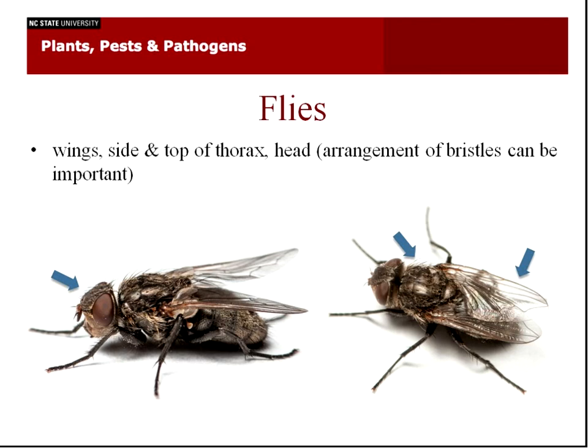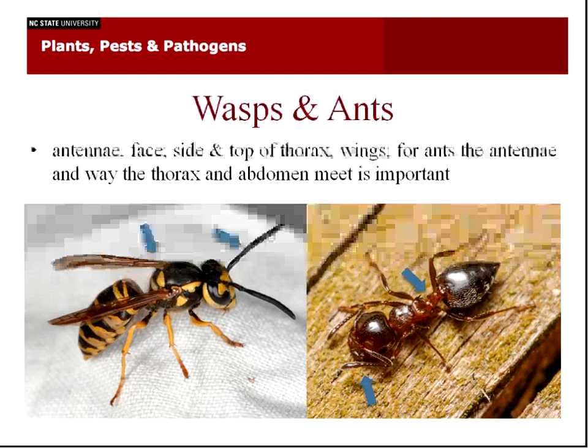For flies, taking pictures of the wing veins, the thorax with the bristles, and then the head — especially the antennae and the bristles on the head — are very important for identification. Now, if it's a very large, showy insect, taking a whole picture of the entire insect is usually enough because they're usually very common and conspicuous. Smaller specimens, though, you're going to have to take pictures of a lot more angles.